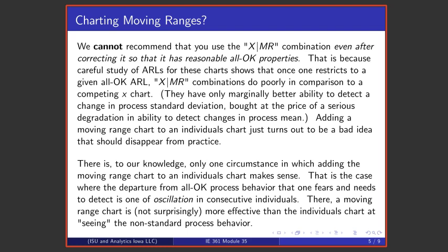To our knowledge there is only one circumstance in which adding a moving range chart to an individuals chart makes any sense: that's the case where what you're trying to detect is some kind of oscillation of consecutive individuals. In that situation a moving range chart is more effective than the individuals chart at seeing up, down, up, down oscillating process behavior.